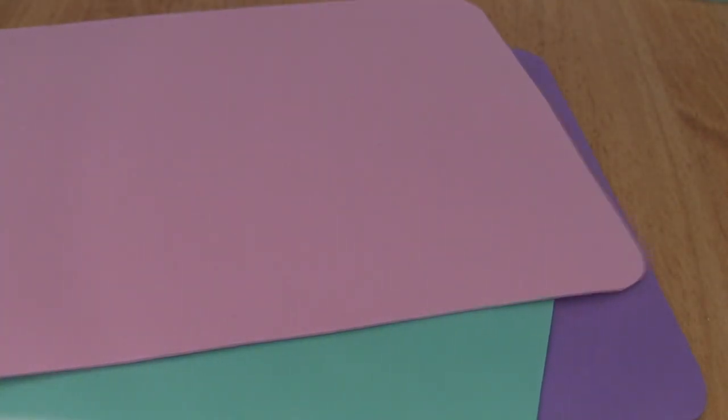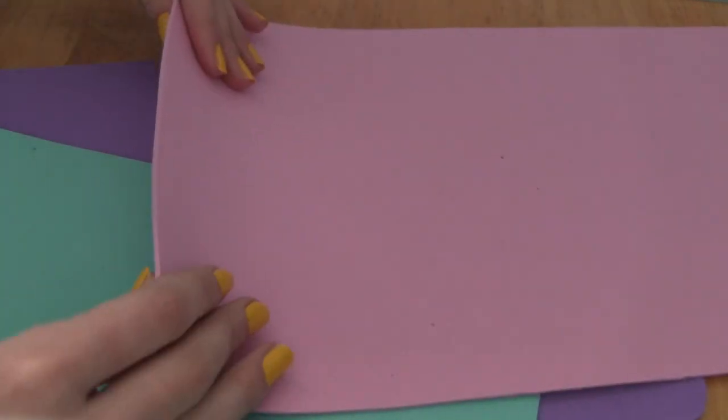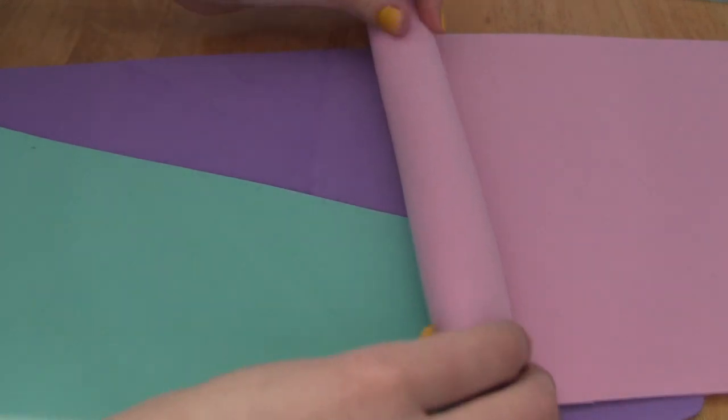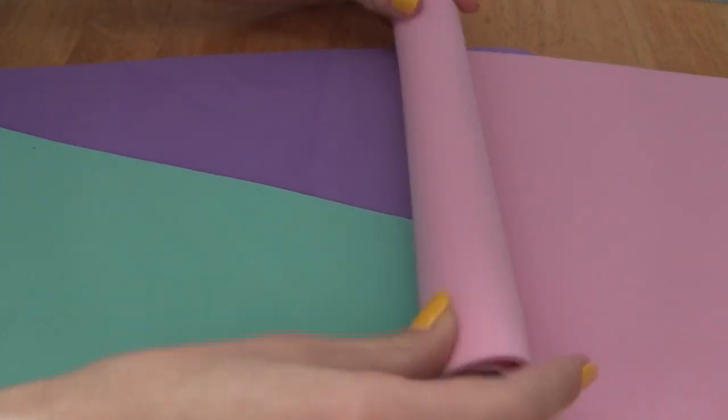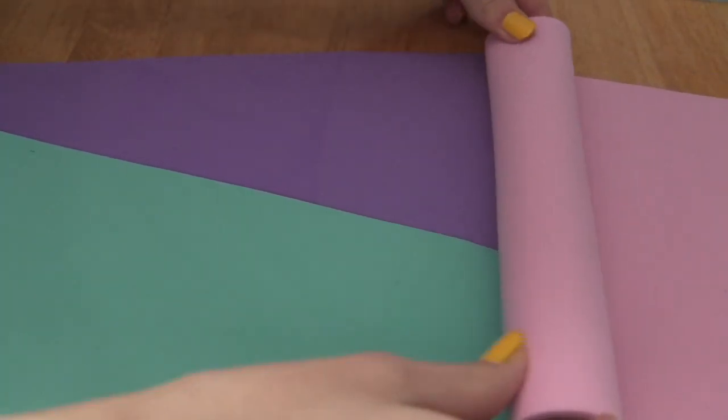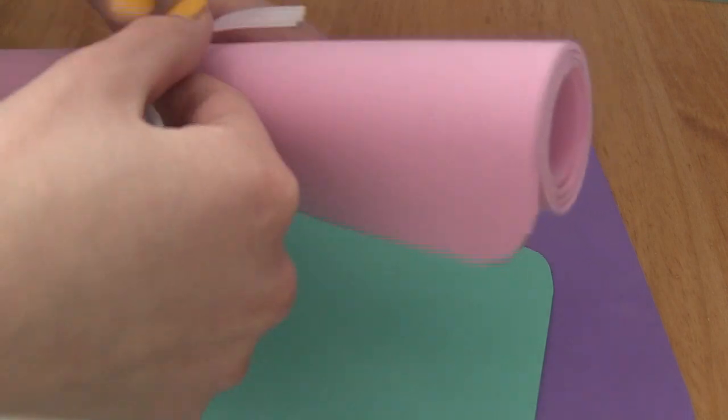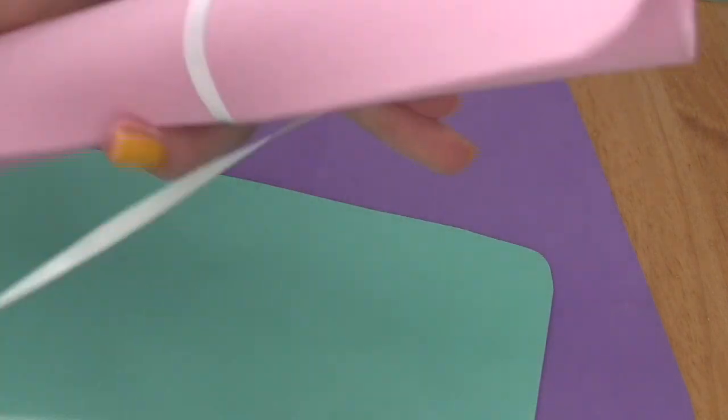So now for easier storage, what I'm going to be doing is just rolling up the mat like so and then using some white ribbon I'm going to be wrapping it around and tying a little bow. And that's it.